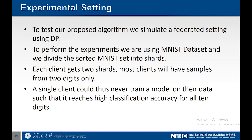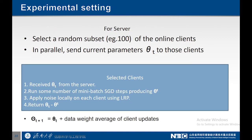To perform our experiment, we use the MNIST dataset, which is sorted using two shards so each client gets two shards. Most clients will have samples from two digits only, meaning a single client could never train a model reaching high classification accuracy across all ten digits. For the experiment setting, we use a random subset of 100 online clients. In parallel, we send the model to those online clients, which receive updated parameters from the server and apply noise locally using layer-wise propagation before sending results back to the server.